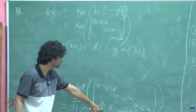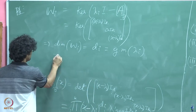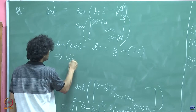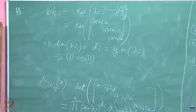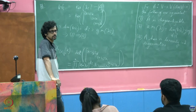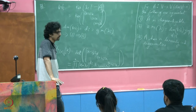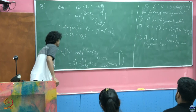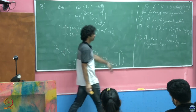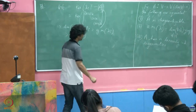Earlier we saw that d_i was the algebraic multiplicity; now we see that it is also the geometric multiplicity. Therefore, 1 implies 2. Is this clear? Now we have to show that 2 implies 3.